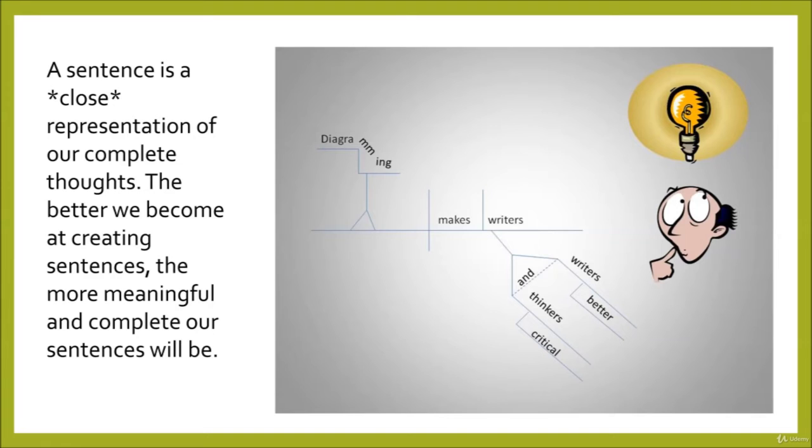As there is no one-to-one correlation between any thought and any set of words used to express that thought, we cannot truthfully define a sentence as a complete thought. We can, however, define a sentence as a close representation of a complete thought. The closer to our thoughts we can make our sentences, the more effectively we communicate.